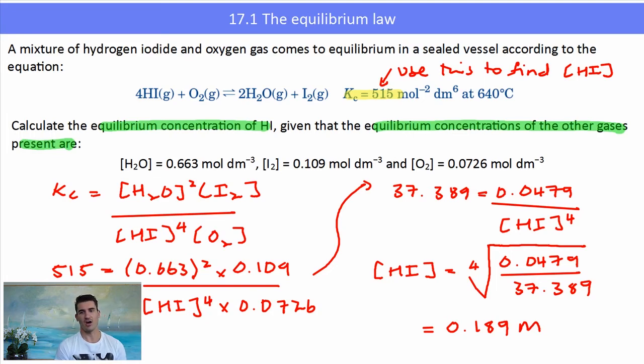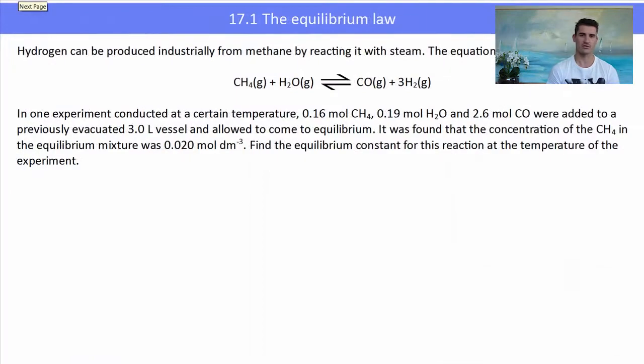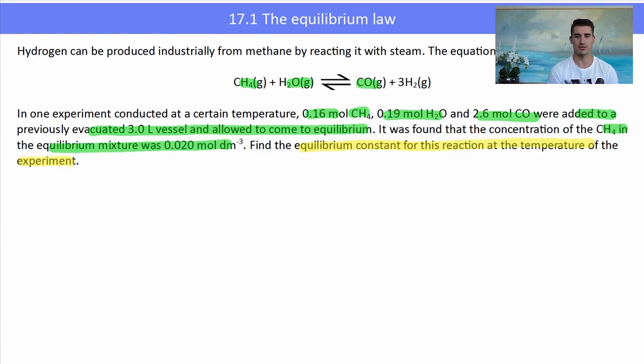The final one, another ICE table question. This time we've got four species that we need to deal with. Again, we can see that we're given some information about before (initially) and then some information about after. Remember, we must get the units correct. Here we've been told some information about mole, and then they've told us the equilibrium mixture contains a concentration. So we need to use our ICE table to work out our change and equilibrium concentration, then sub it into our equilibrium expression.